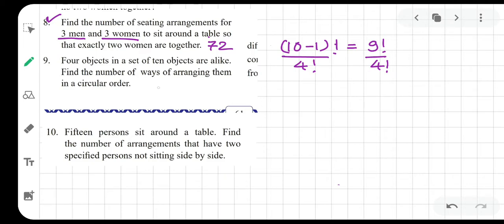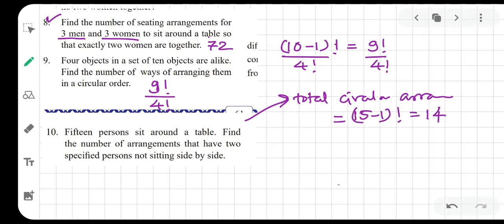Let me write it here: 9 factorial upon 4 factorial. Now tenth question: fifteen persons sit around the table. Find the number of arrangements that have two specified persons not sitting side by side. So simply, fifteen people can sit in how many ways? 14 factorial. But from those, two people who should not be together. Let's start with this. Total circular arrangements, if no restriction, it is 15 minus 1 factorial, that is 14 factorial.